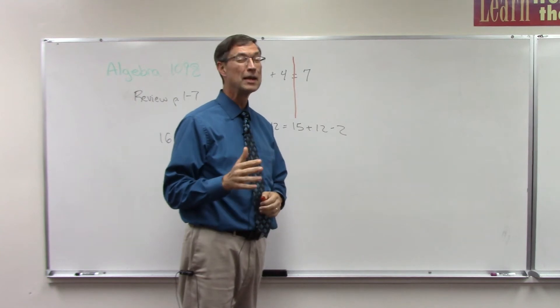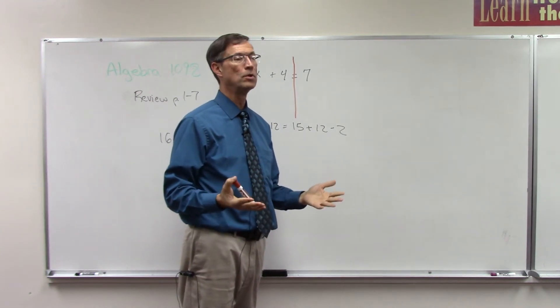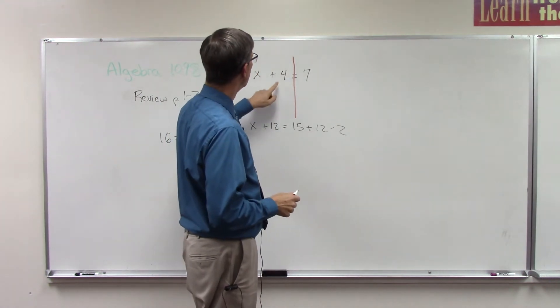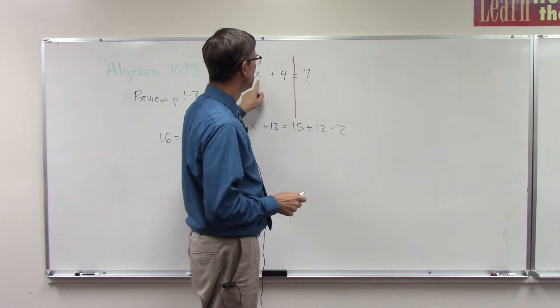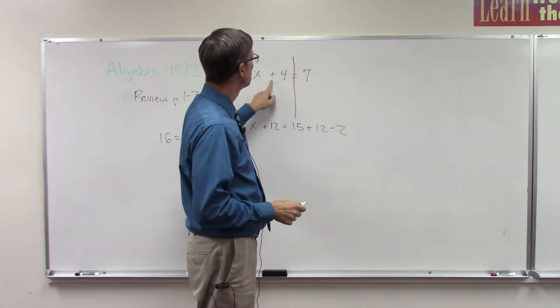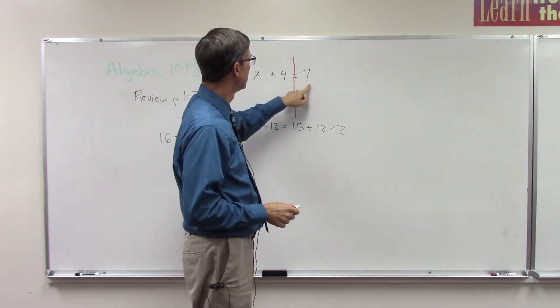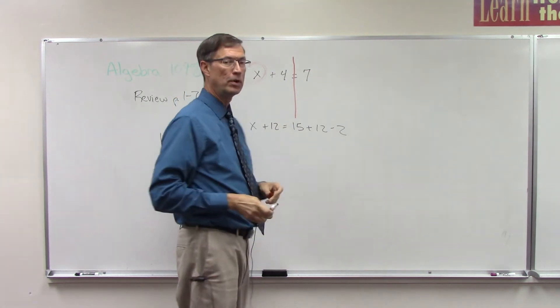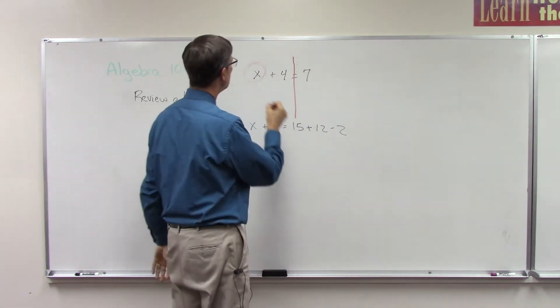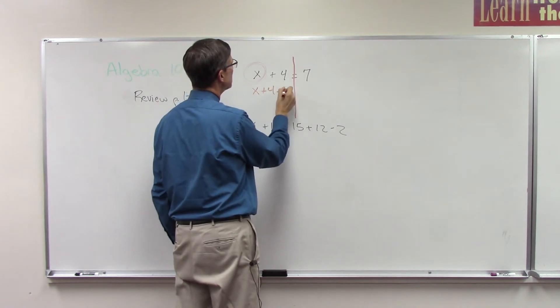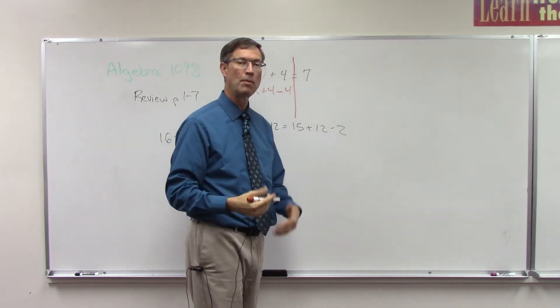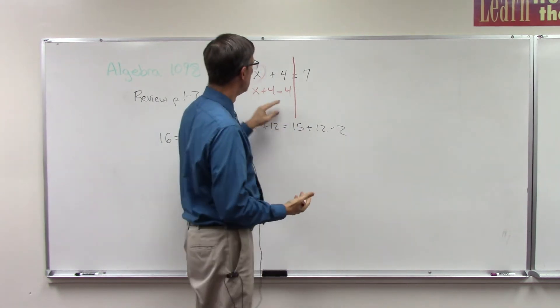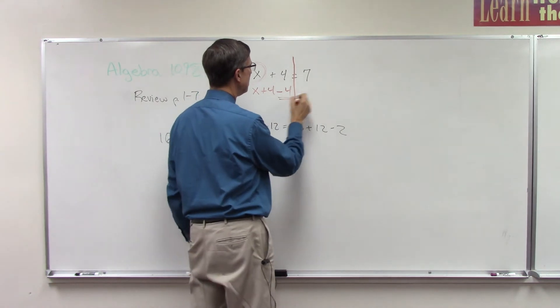The rule is we undo what's being done to the variable. Since I have plus four here, and I'm trying to isolate x—you're always trying to solve for the variable—then I need to in the next step subtract four. So you see how I'm undoing? Subtraction is the opposite of addition. So plus four, I'm going to tack on this minus four.